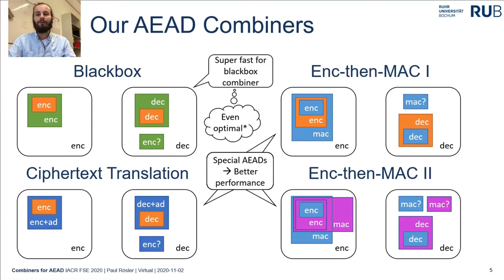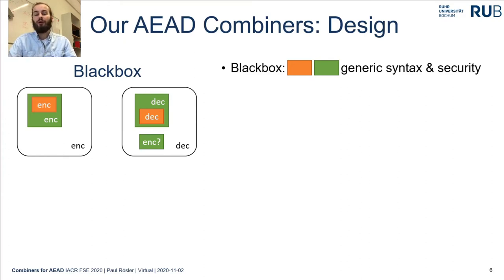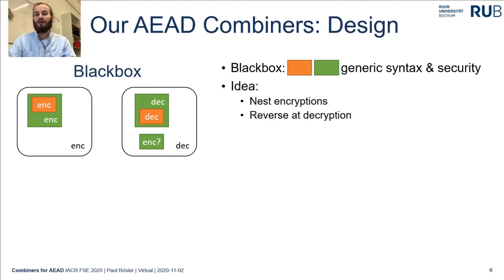We begin with the black box combiner. This black box combiner does not assume any further special properties from the combined AEAD schemes, meaning they only provide generic syntax and generic security requirements. Keep in mind that if we combine two AEAD schemes, only one of them needs to be secure such that the combined encryption and decryption still provide the required security properties. The idea is that it nests encryption: the first encryption is an input to the second encryption, and on the receiver side decryption is conducted in the reverse direction.